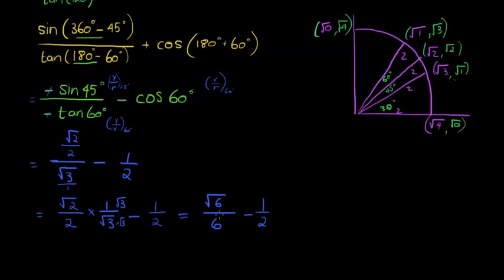Okay. And in order to subtract these two fractions, I need to multiply this with a 3 and that with a 3. And what do I get? In the numerator, I get the square root of 6, which is not a pretty number. Minus 3 over 6. And that is my final answer.